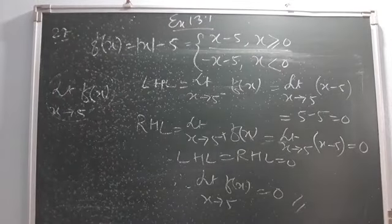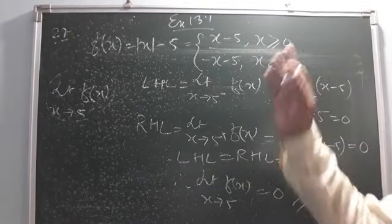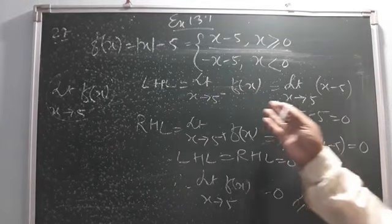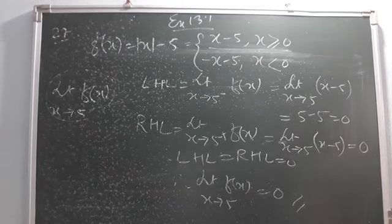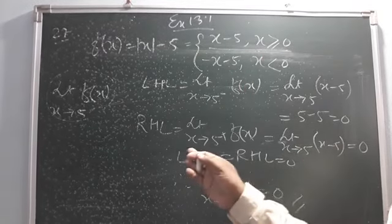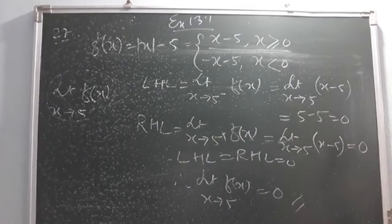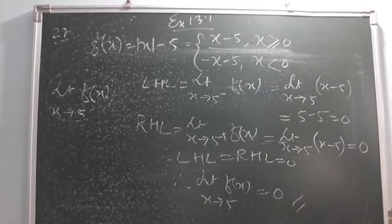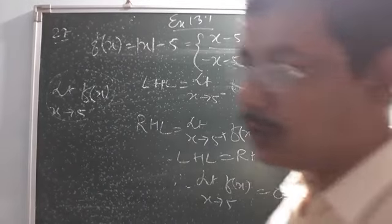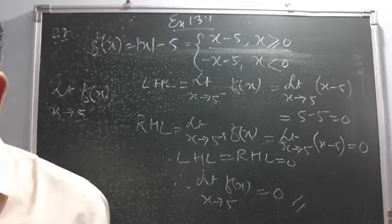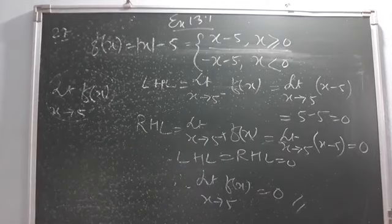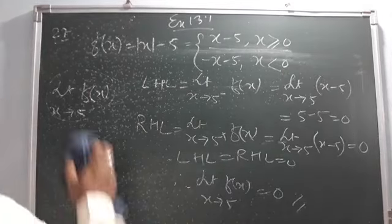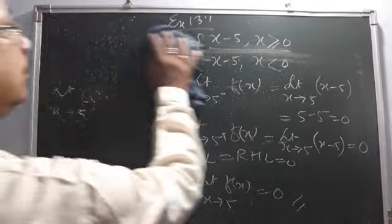This is the technique of finding this limit. What I have done: first I broke the modulus, then I wrote the LHL, then the RHL, and found that LHL = RHL = 0. So this is our answer for question number 27. Now we are going to do question 28.